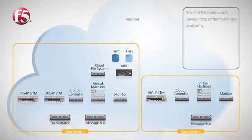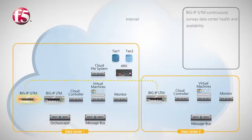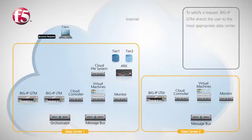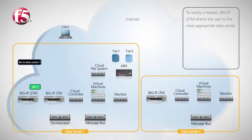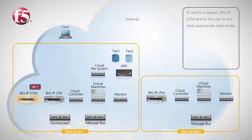Big IP GTM works to continuously survey the health and availability of each data center. It compares the data it retrieves to pre-set performance thresholds. As a user requests an application, Big IP GTM determines which data center is closest or most available. This decision could be based on geo-location data or simply on throughput thresholds, which indicate that a data center is approaching its maximum level of traffic for a given application.